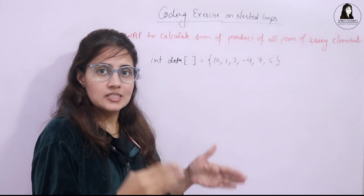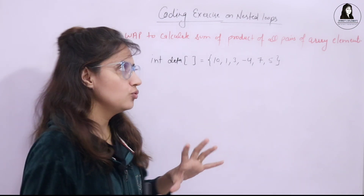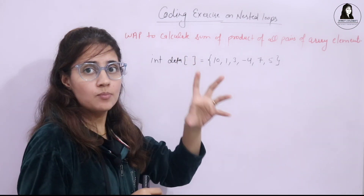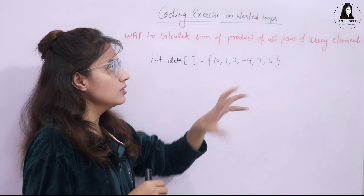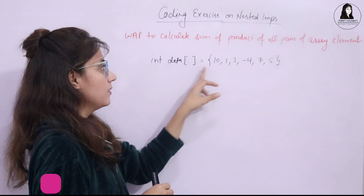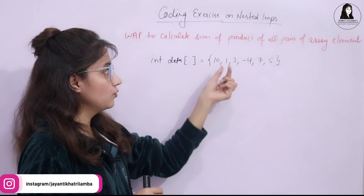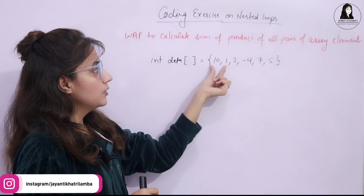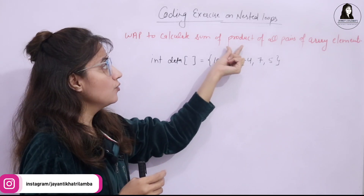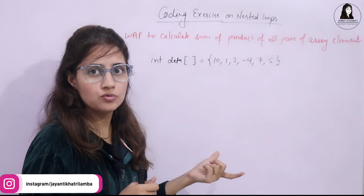Based on that, we will see one coding exercise in this video. What you have to do is write a program to calculate the sum of the product of all the pairs of array elements. This array has the elements: 10, 1, 3, -4, 7, 5. You have to find all pairs of these elements and then compute the sum of the product of all the pairs.